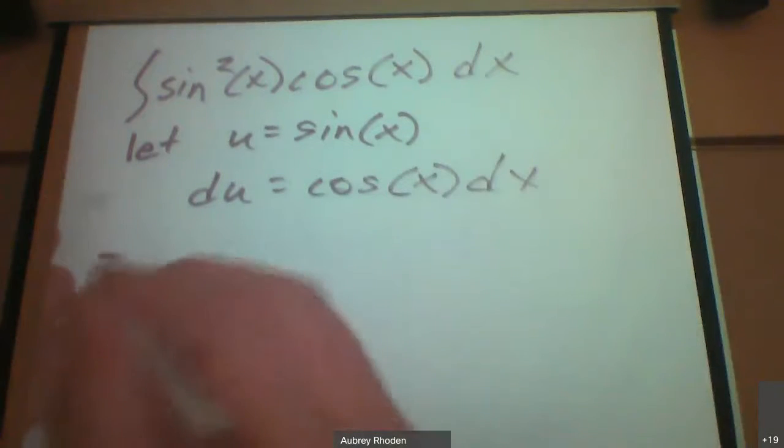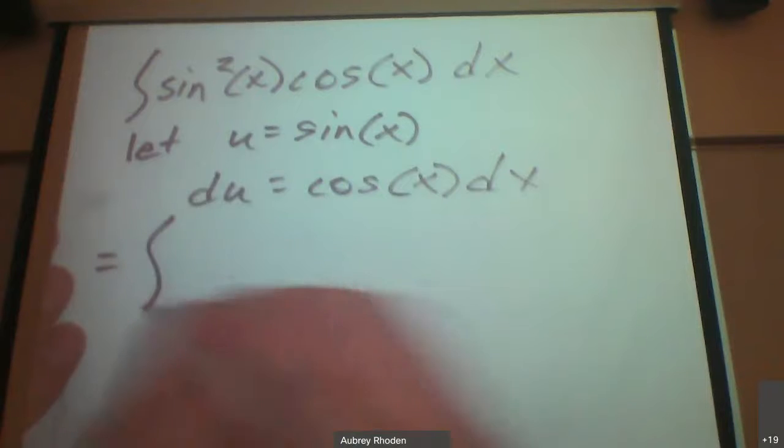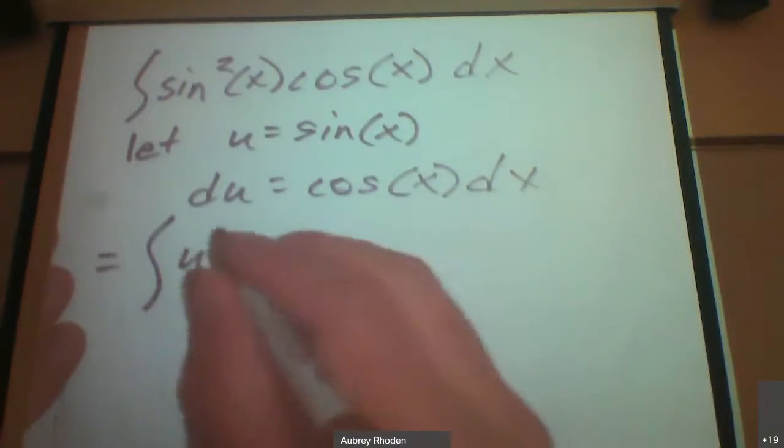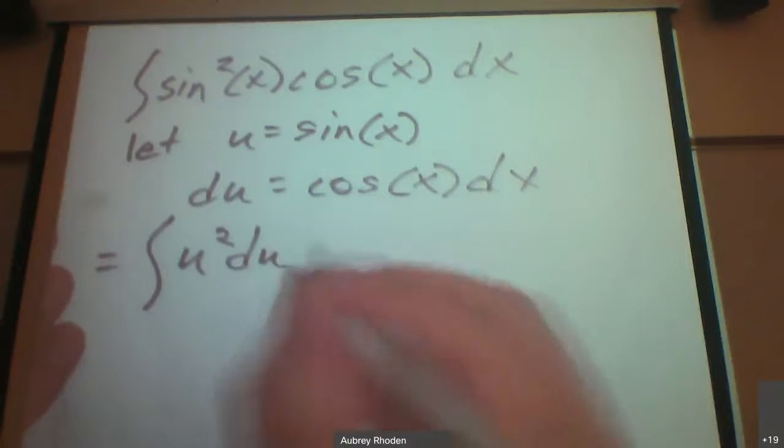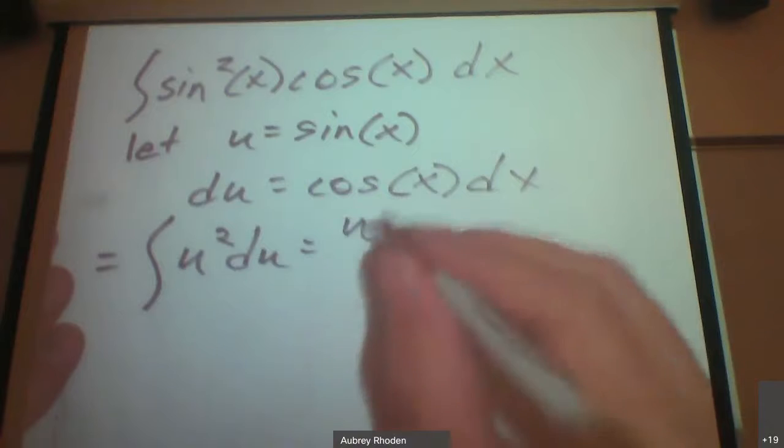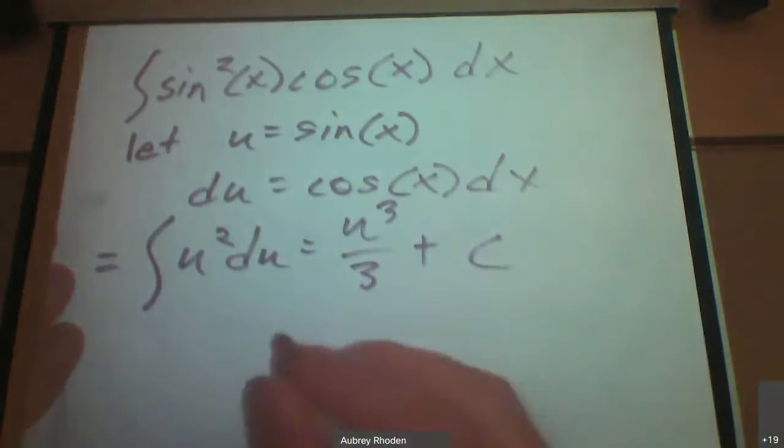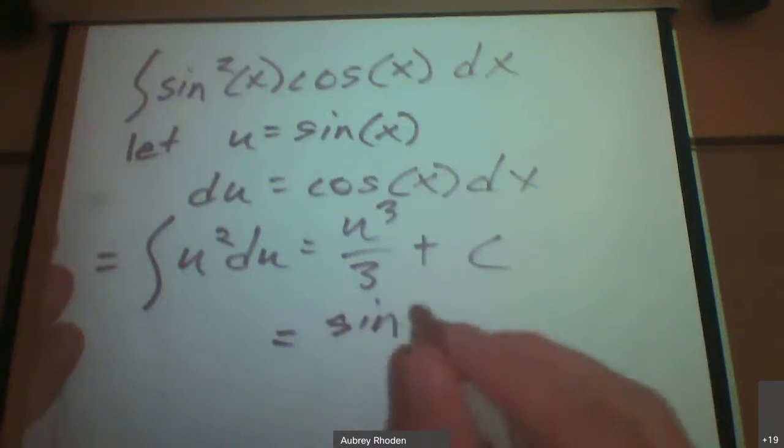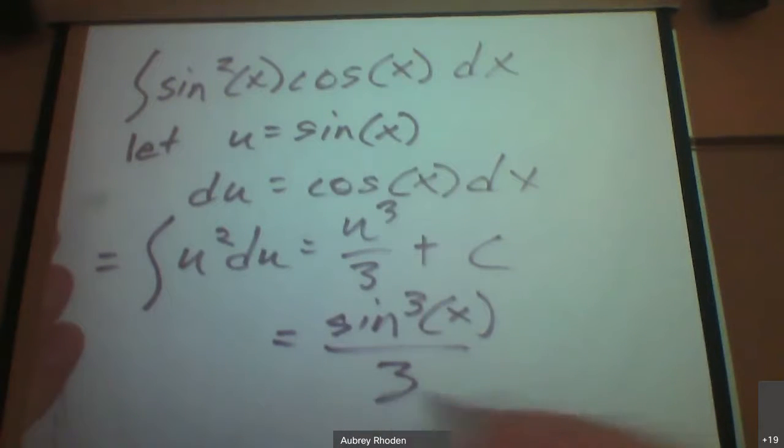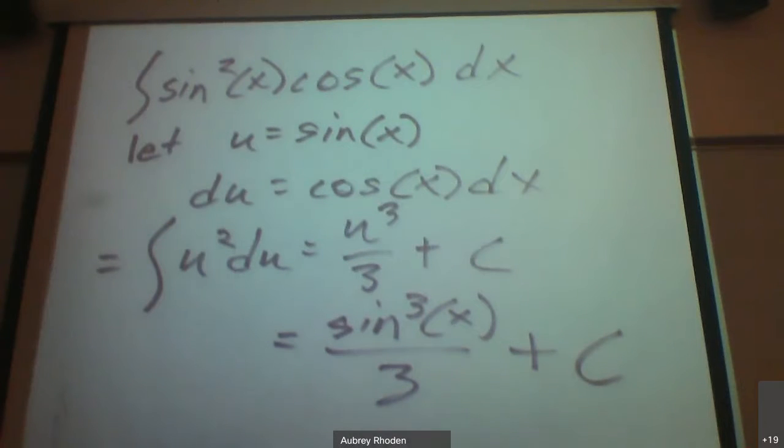And so this becomes then just the integral of just u squared du, which becomes u cubed divided by 3 plus a constant, which becomes sine cubed of x divided by 3 plus a constant.